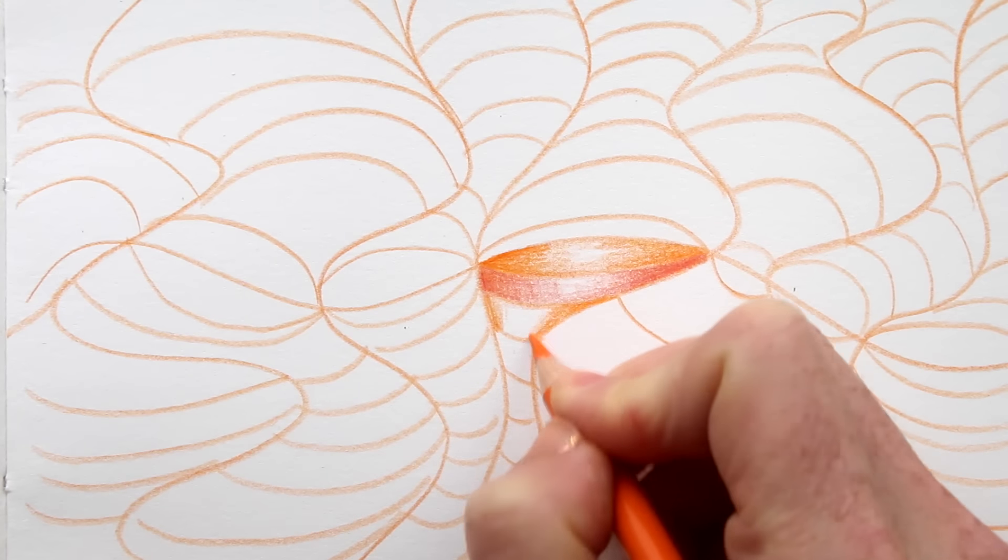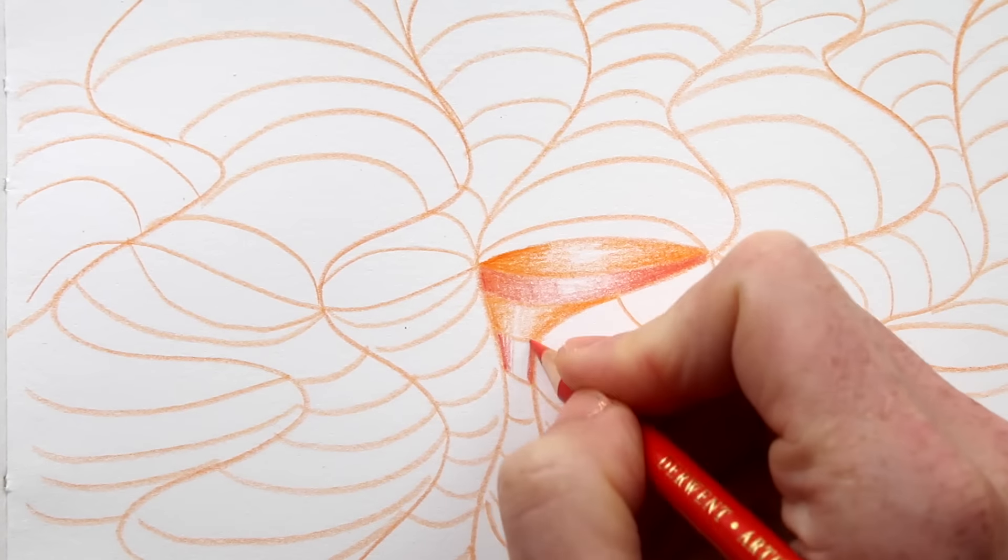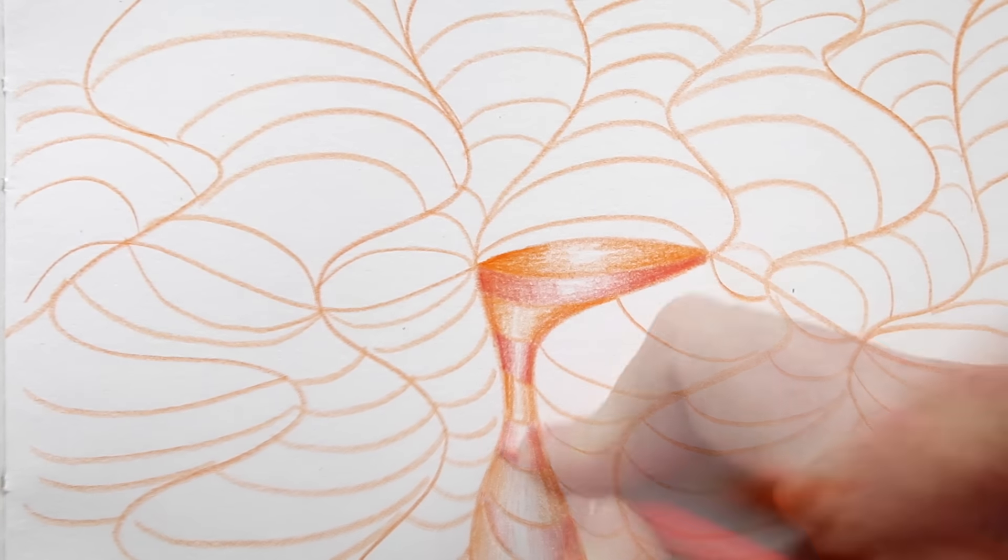Keep adding color to darken the corners. I'll also use the red to deepen the orange and the other way around.